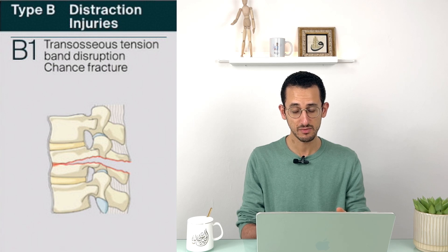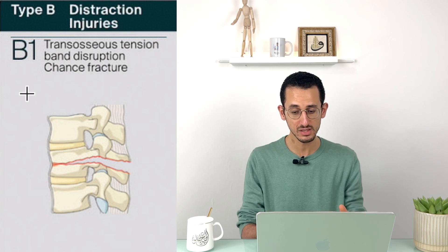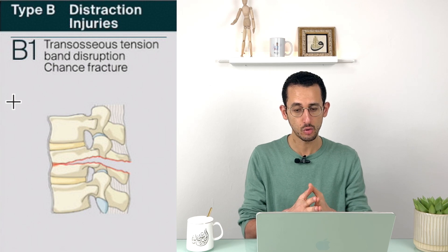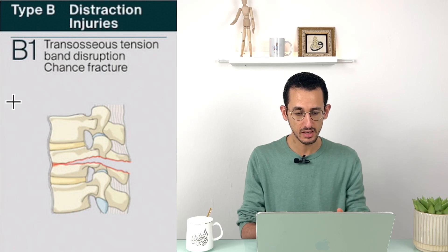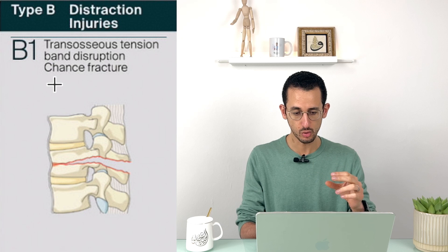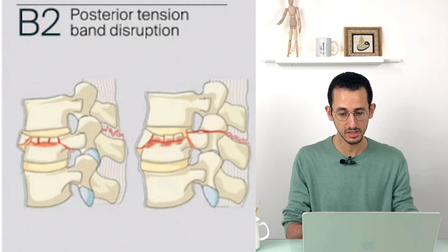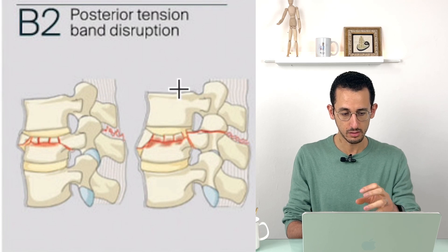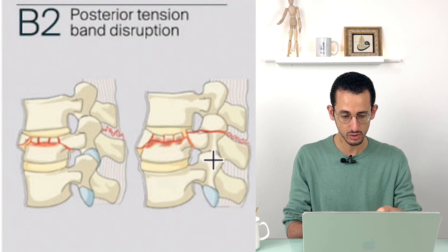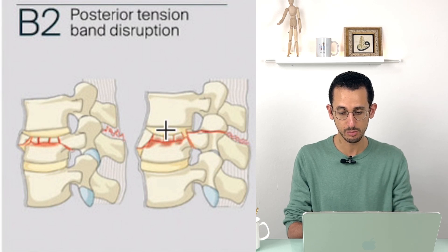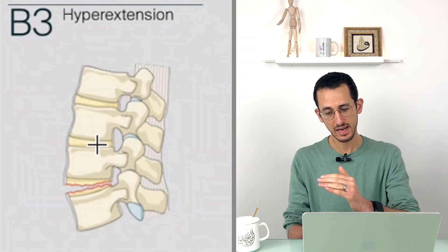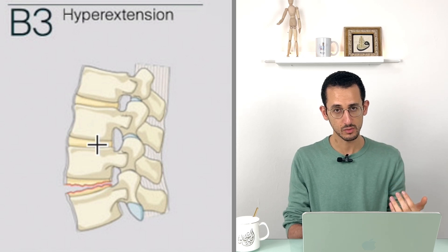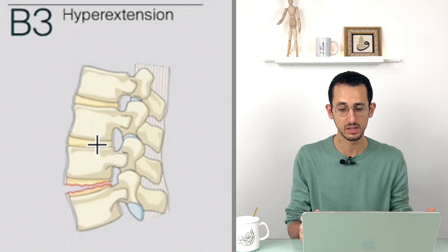Moving to Type B fractures, which are the distraction injuries: B1 is the Chance fracture — a pure trans-osseous injury where severe flexion leads to trans-osseous tension band disruption. B2 is an osseoligamentous injury where the posterior ligamentous complex is also disrupted, resulting in complete tension band failure. B3 is a hyperextension injury, where the injury is more towards the anterior part of the spine.